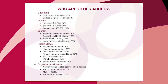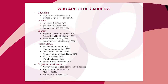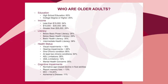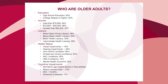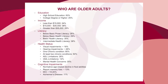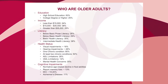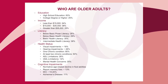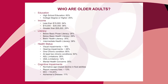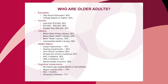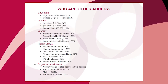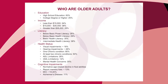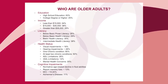Many older adults have low income, which has lots of implications for what they can afford. And something we've been focusing on in our CREATE research is literacy. Even though you know it, you don't really know it until you see the numbers: 26 percent of older people have below-basic prose literacy, and for health literacy, only 3 percent have proficient health literacy, according to very recent CDC data.